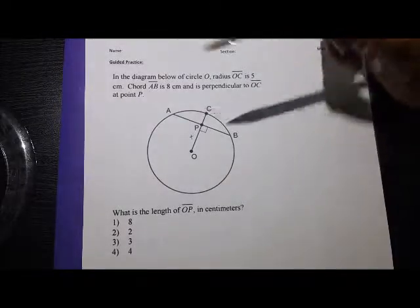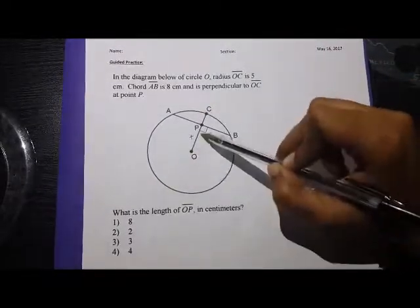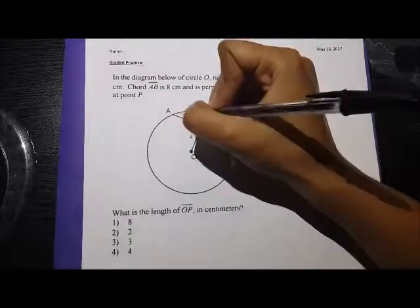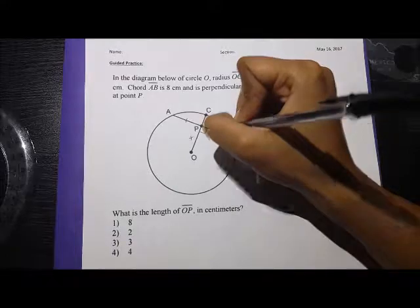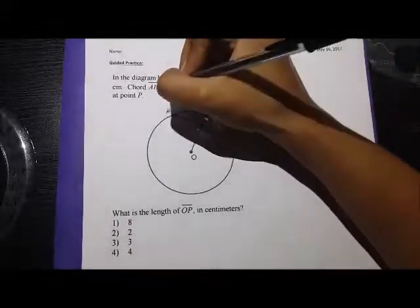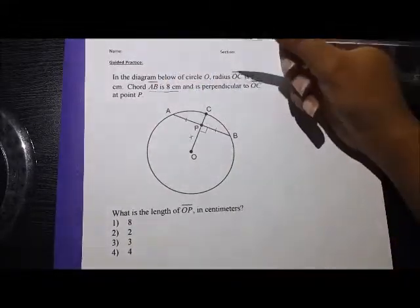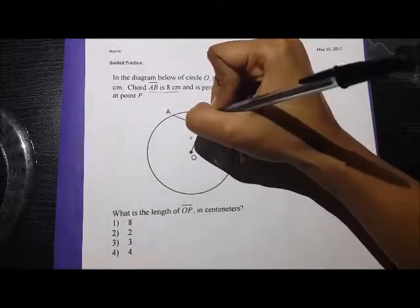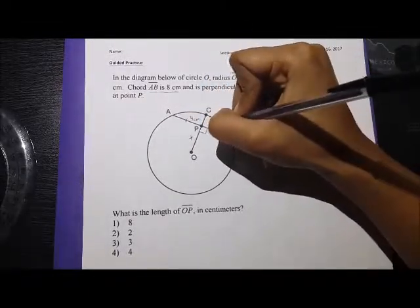So again, because this is our radius and it's perpendicular, we can automatically assume that it is bisected. So we know from the description that AB is 8 centimeters, so that means AP is 4 centimeters and PB is also 4 centimeters.